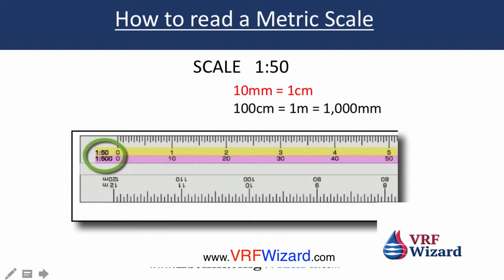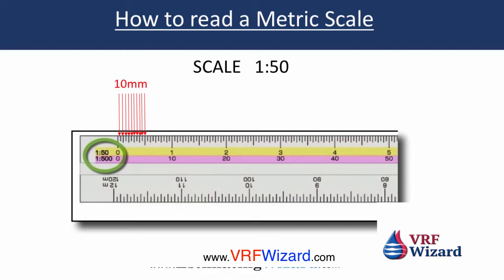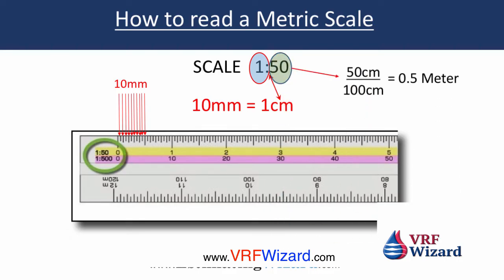So 10 millimeters is 1 centimeter, and 100 centimeters is 1 meter, or 1,000 millimeters. These little marks on the scale are millimeters. On a 1 in 50 scale, it's going to take 10 of these — 10 millimeters, those small dashes — to equal 1 centimeter. So 1 centimeter is the first number on the left, which is what you measure on the drawing, and that's equivalent to 50 centimeters, or half a meter.